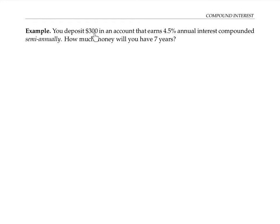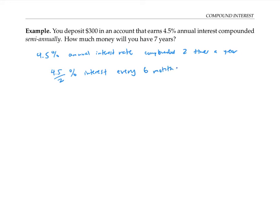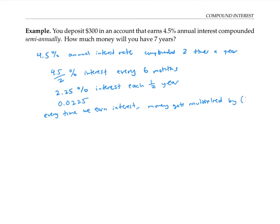Let's deposit $300 in an account that earns 4.5% annual interest compounded semi-annually. This means two times a year, or every six months. A 4.5% annual interest rate compounded two times a year means we're actually getting 4.5 over 2% — that's 2.25% — interest every time it's compounded, that is, every six months. Note that 2.25% is the same as 0.0225 as a decimal, so every time we earn interest, our money gets multiplied by 1.0225.